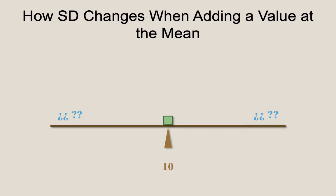So if you add a value at that fulcrum, at the balance point of 10, then the balance remains as is, and thus the mean is still 10. The mean is unchanged by adding a value that equals the mean.